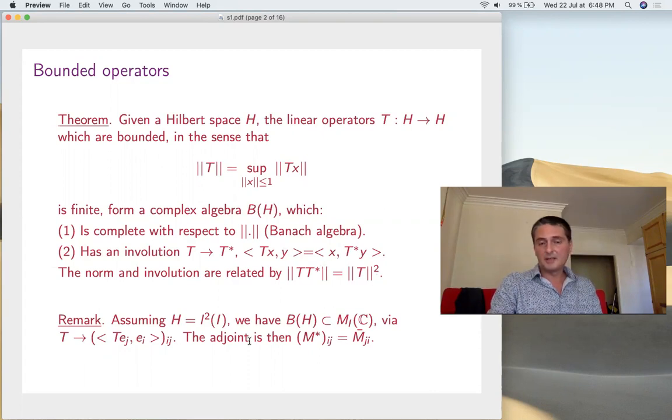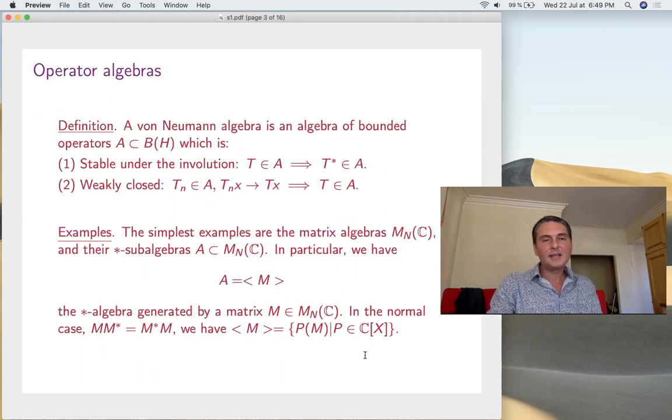Another remark is that these operators are, in fact, just some infinite matrices. If you assume that H has a basis indexed by i, then H is L² of i and you have infinite matrices. The coefficients are just these guys as usual and the adjoint is given by the usual formula. However, in practice, we are mostly interested in spaces of functions, for instance L² of [0,1] or things like that. We don't have an explicit basis, so it's better to think of operators as objects on their own.